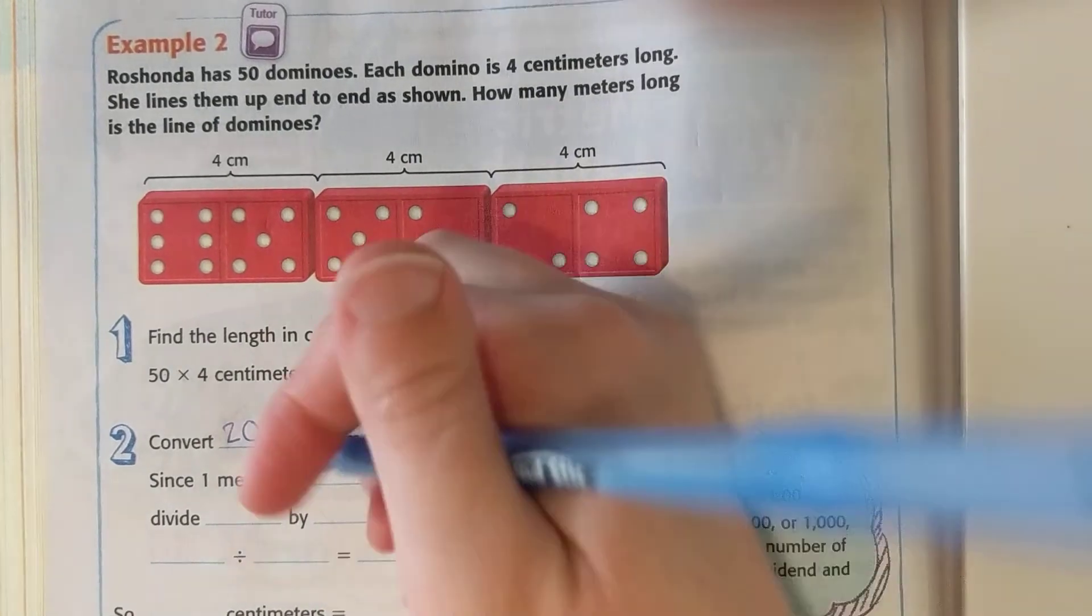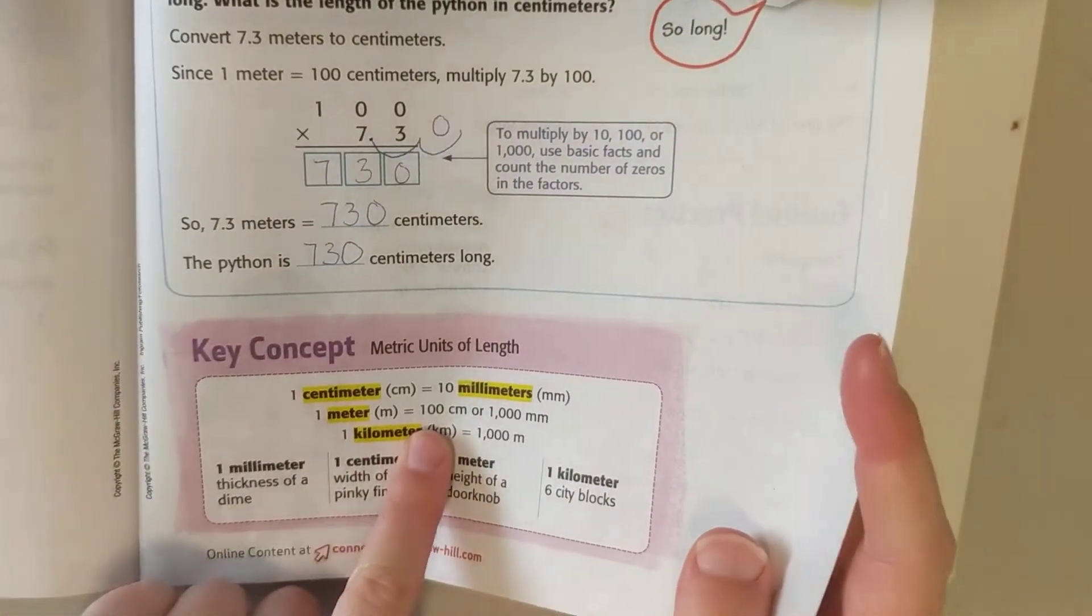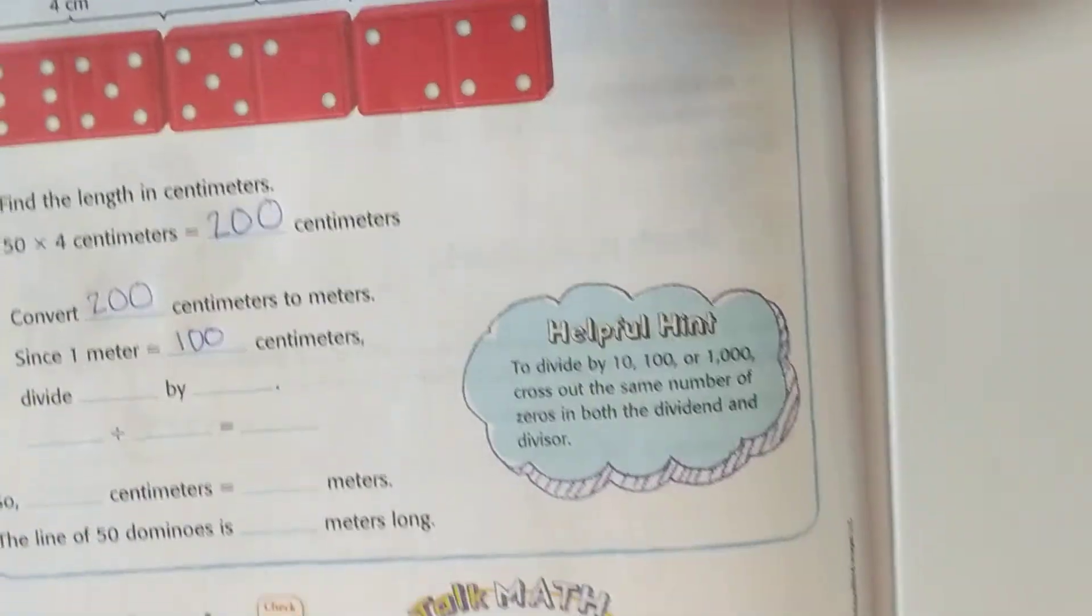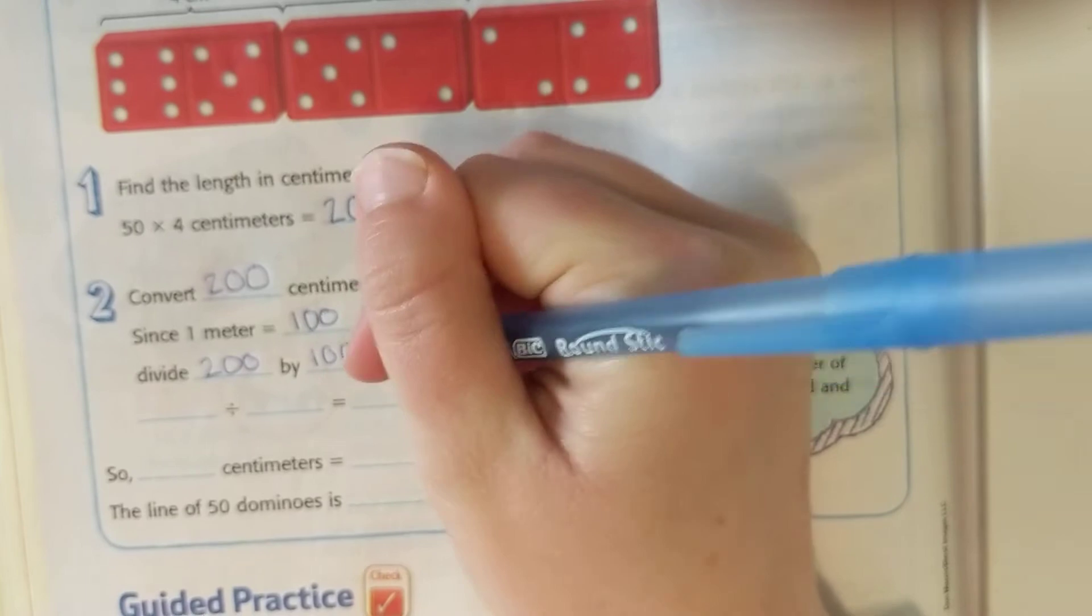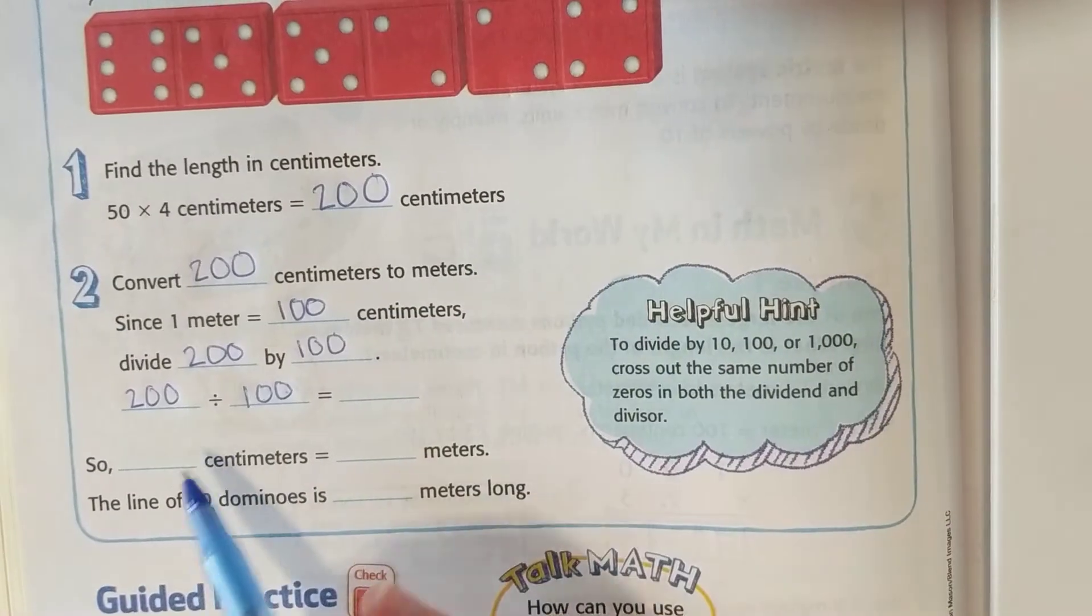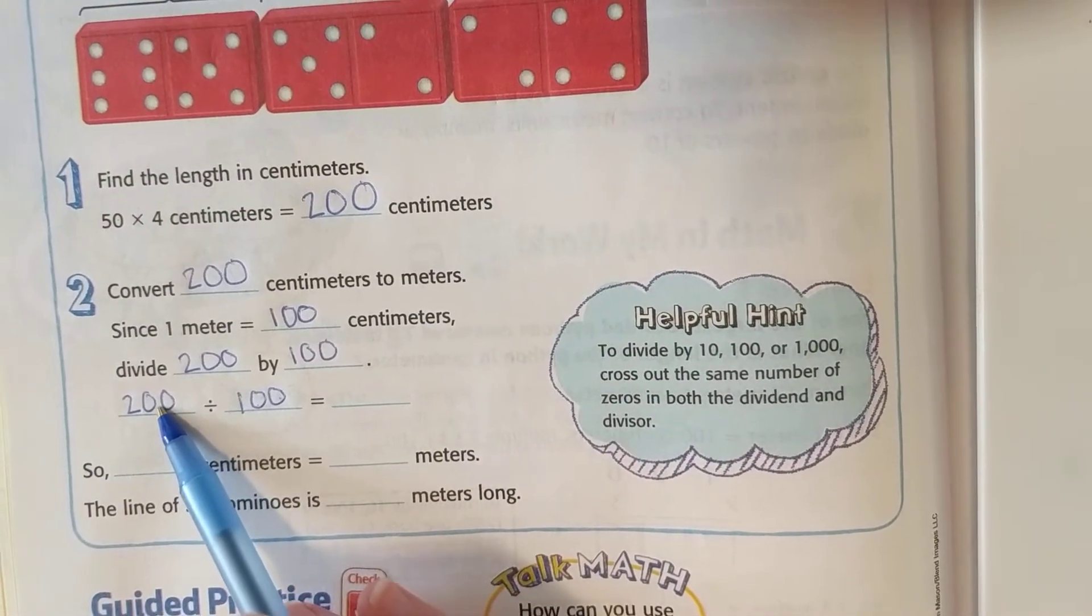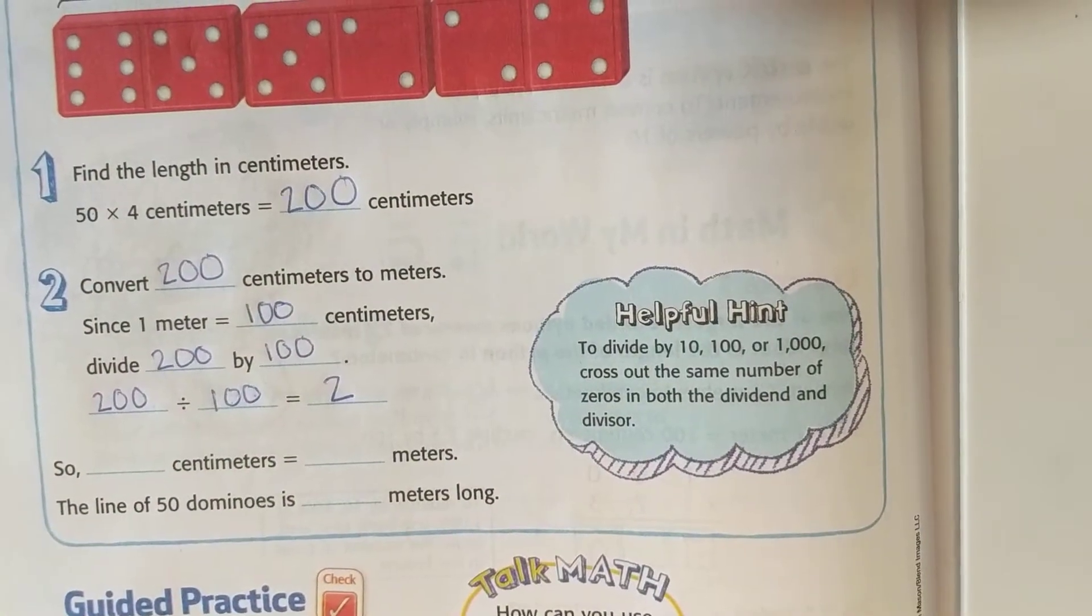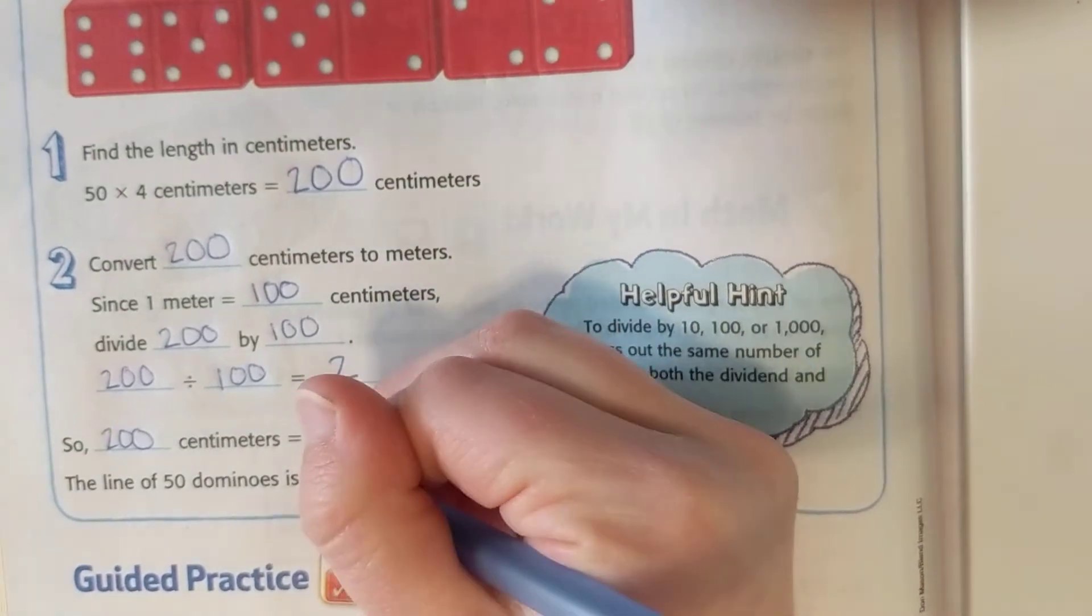Since one meter is 100 centimeters, you can check if you're not sure, if you couldn't remember whether it was 100 or 1000. We're going to divide 200 by 100. You can use that same trick for dividing 200 by 100. There's two zeros here. If there's not a decimal place, you just start at the end where the decimal would be and we're going to move it over two spots. We're dividing so we go to the left one, two. 200 divided by 100 is just two. So 200 centimeters is equal to two meters. The line of 50 dominoes is two meters long.